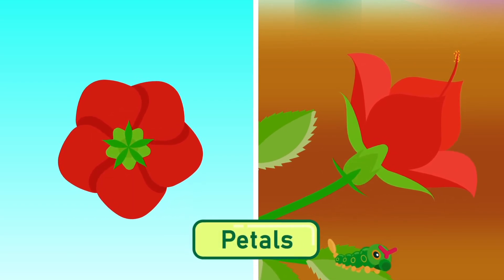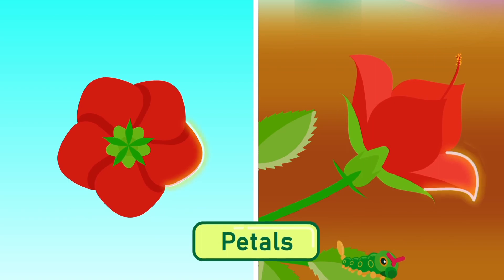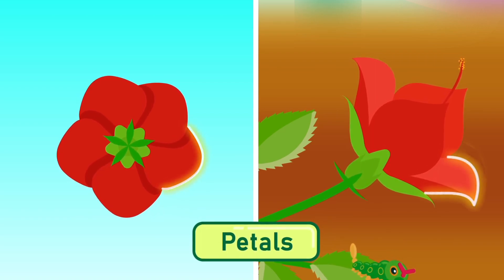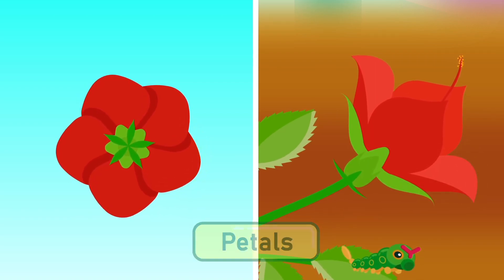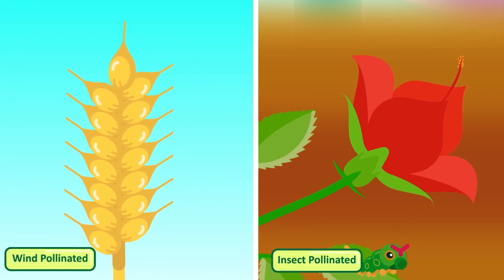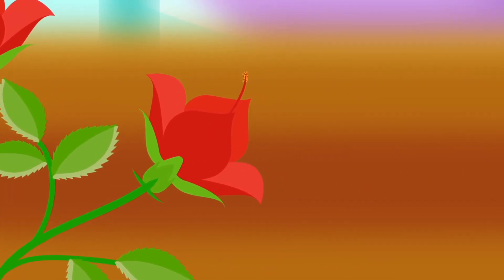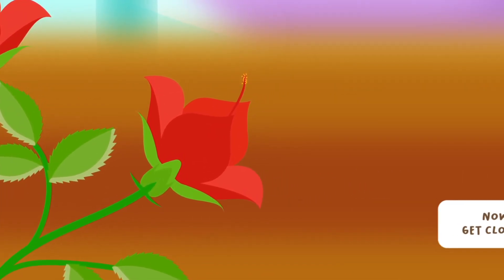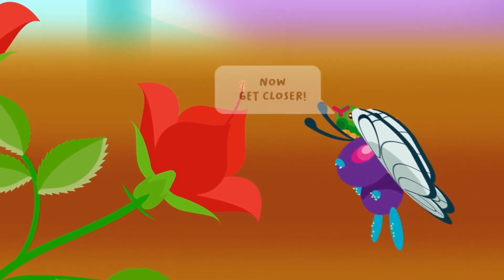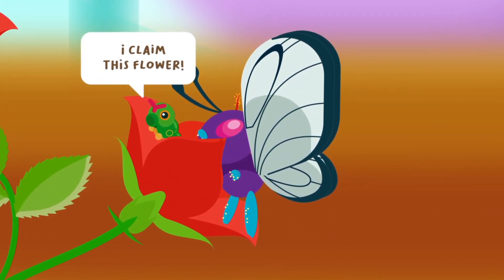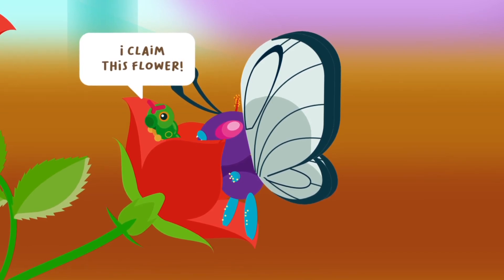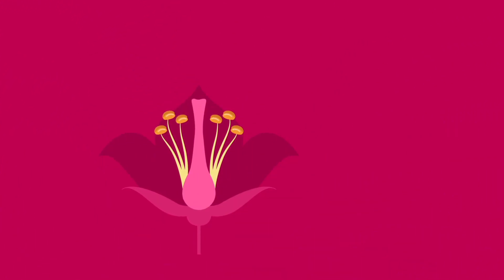Petals are modified leaves forming the conspicuous part of the flower. They are usually brightly colored in insect-pollinated flowers. The whorl of petals is called the corolla. Petals have two important functions: one, to attract insects for pollination, as petals often have striking colors; and two, to provide a landing platform for insects.